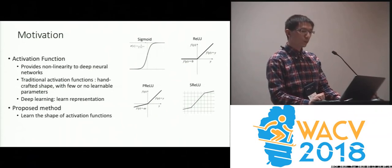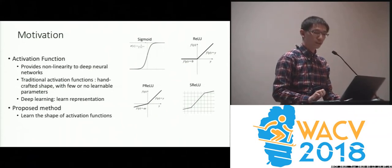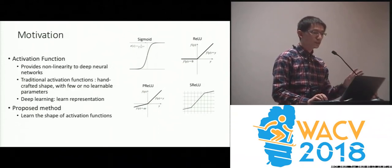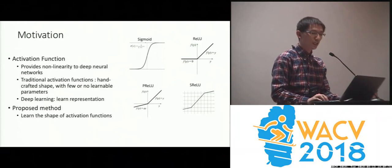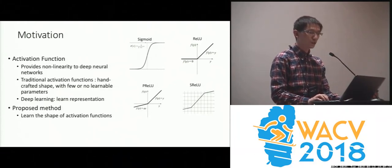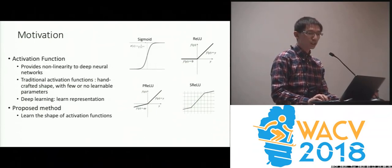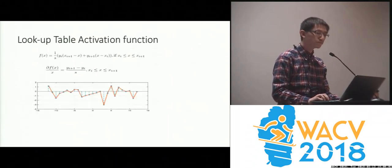In contrast, one of the most important reasons for the success of deep neural networks is that you can learn representations purely from the data. So the question we want to ask is: if we put minimum constraint on the shape of the activation function, can we learn its shape together with other network weights directly from the input data?